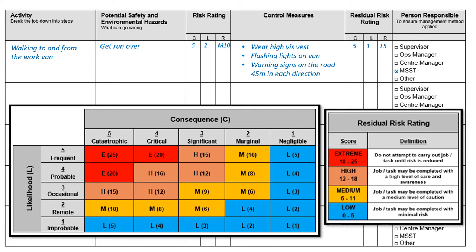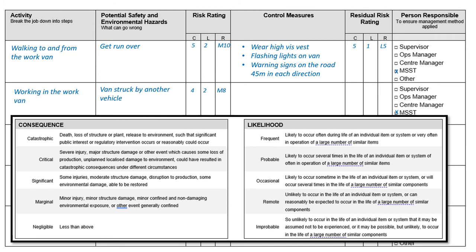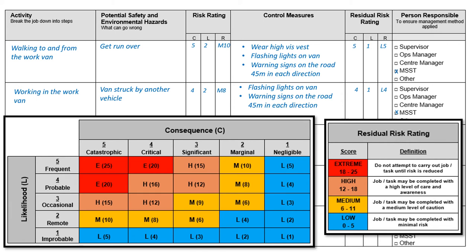So what we've done now is — the consequences are still catastrophic irrespective of the likelihood; if you get hit by a car you'll most probably die. But now with these control measures, the likelihood is now improbable. We've dropped the likelihood to one, so the risk rating is now L5 — much lower. We saw the technician working in the back of the van. Again, the van can be hit or struck by another vehicle. Flashing lights and warning signs on the road are good control measures and will reduce the likelihood. In this case, the consequences are still critical but the likelihood has been reduced — we've gone from an M8 to an L4.